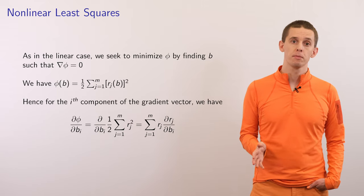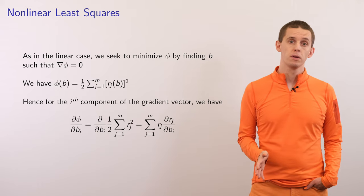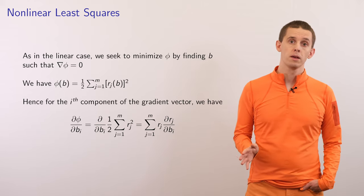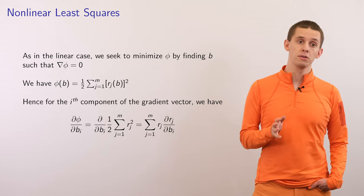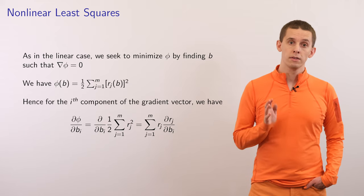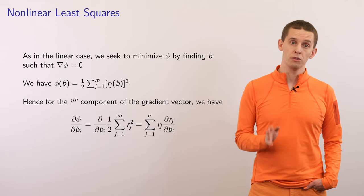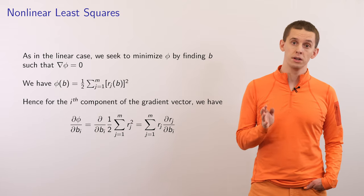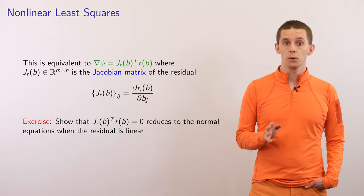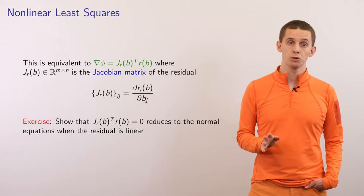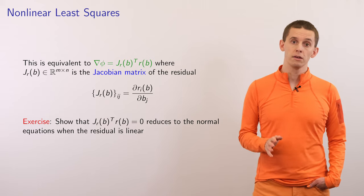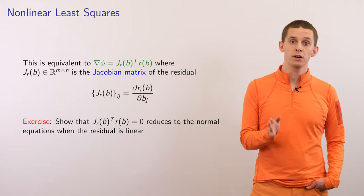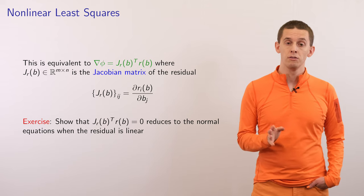As in the linear case we want to minimize phi by finding b such that grad phi equals zero. In general, phi of b will be one-half times the sum from j equal 1 to m of r_j squared. The i-th component of the gradient is the partial derivative d phi by d b_i, which equals the sum from j equal 1 to m of r_j times d r_j by d b_i. We note that this is equivalent to writing that the gradient of phi equals J_r of b transpose times r of b, where J_r of b is the Jacobian matrix of the residual. Specifically, the (i,j) component of J_r of b is given by d r_i by d b_j.